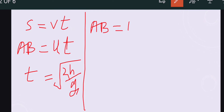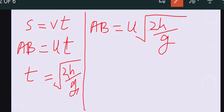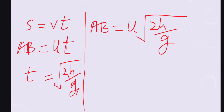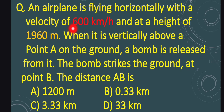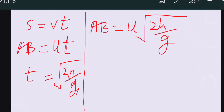The distance AB equals U × √(2H/g). We have U (horizontal velocity), height H, and G is a constant. The horizontal velocity U is given as 600 km per hour, so we will convert it to meters per second.